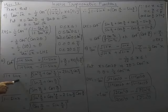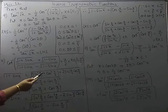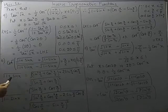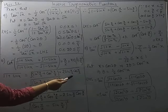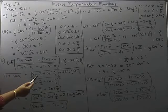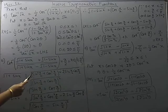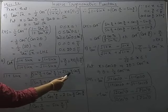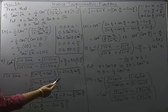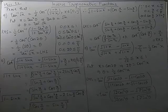Now 1 + sin x is given. We can write 1 in the form sin²(x/2) + cos²(x/2), and sin x as 2 sin(x/2) cos(x/2). So the expression becomes sin²(x/2) + cos²(x/2) + 2 sin(x/2) cos(x/2), which is a perfect square of the form a² + 2ab + b² = (a+b)². Taking the square root gives us sin(x/2) + cos(x/2).